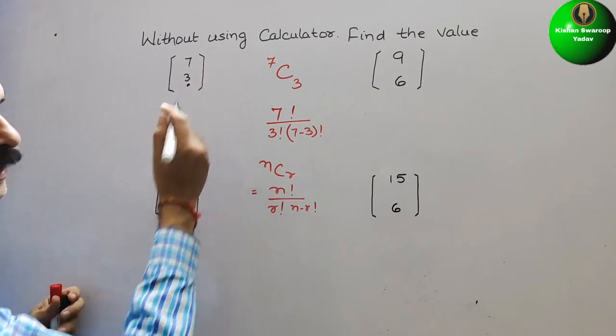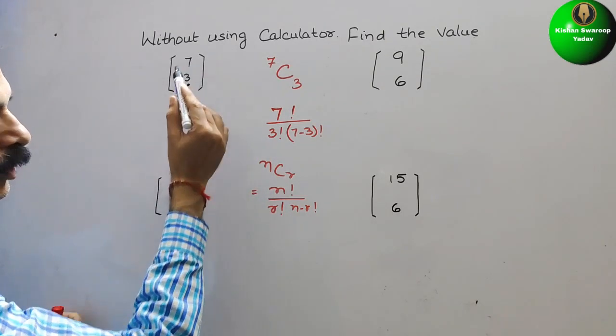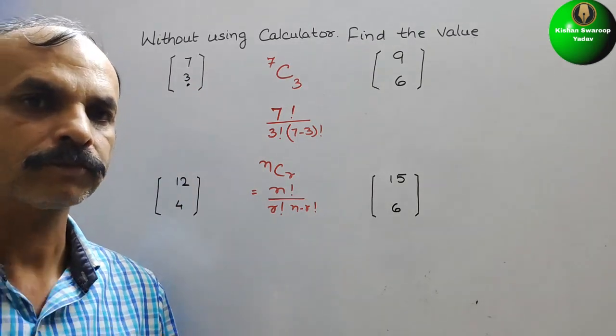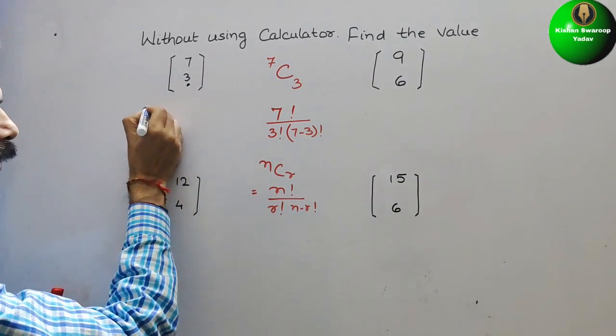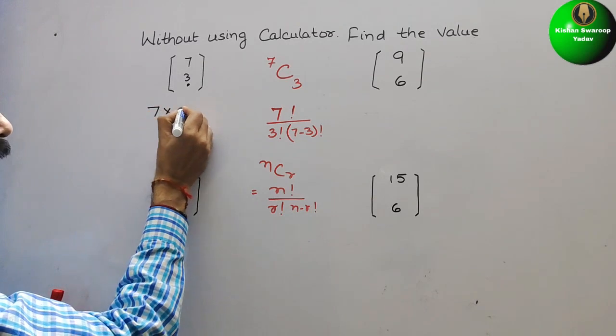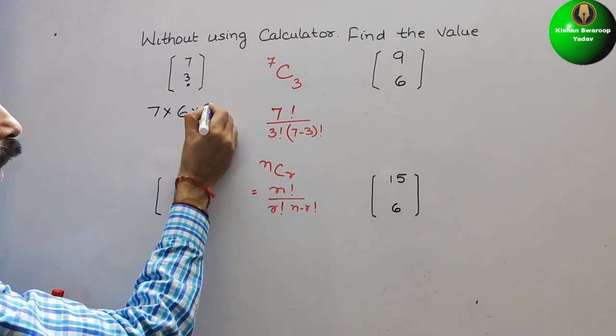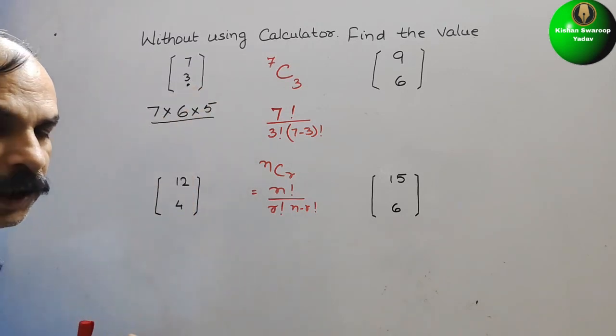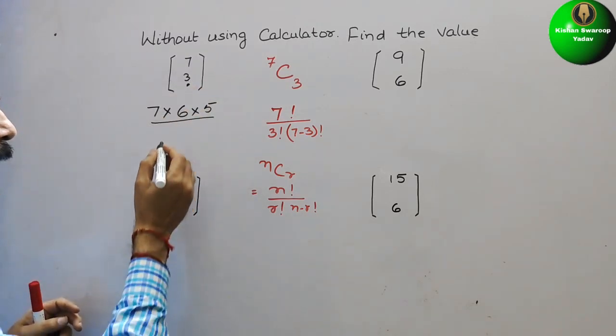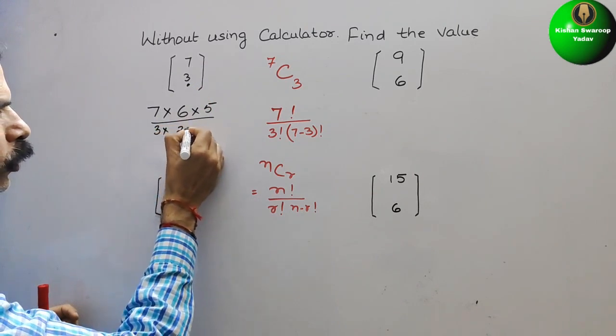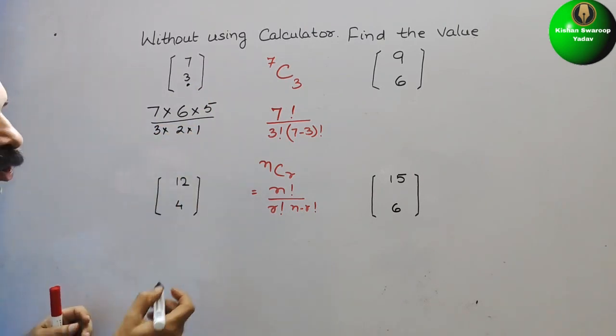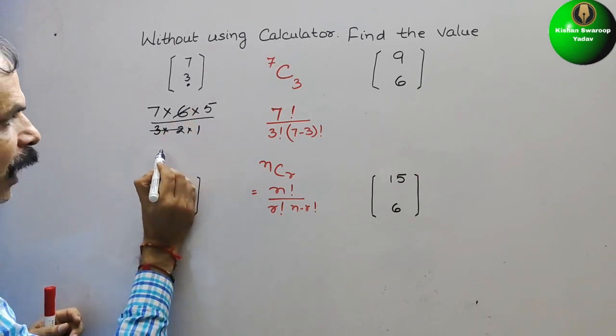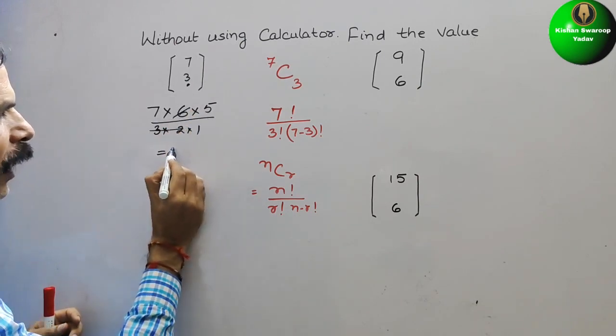Down is 3 and the second 7 factorial we will simply write the 3 digits only. So first is your 7, second is your 6 and next is your 5 by 3, 3 factorial we will write. So that is your 3 into 2 into 1. Now crossing, 3 into 2 is 6 and 6 will go out. So therefore, you will get 7 into 5 is 35.